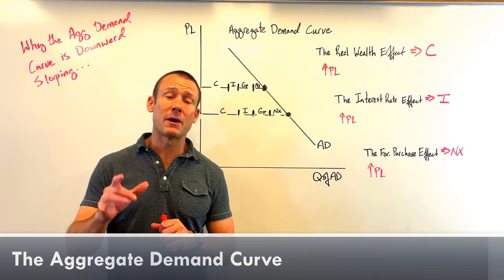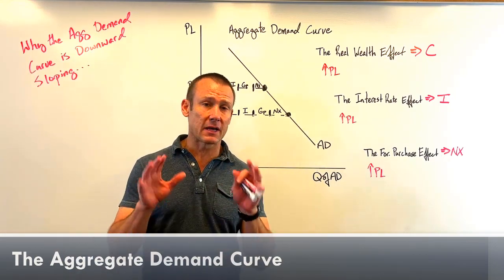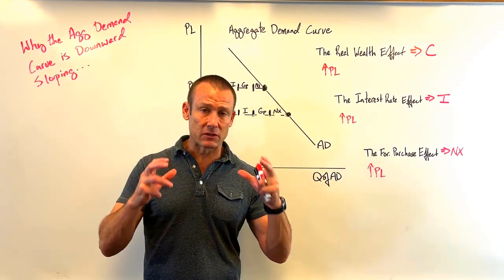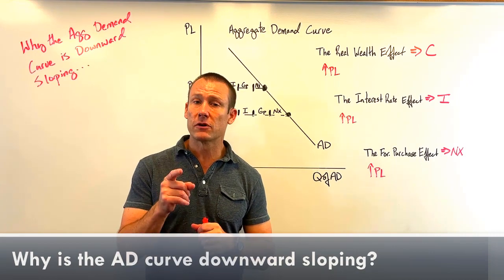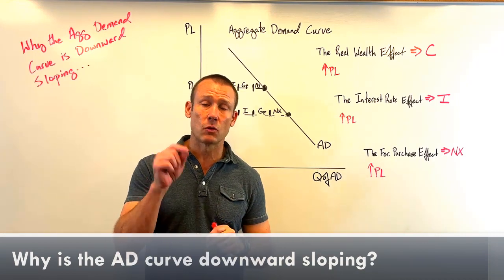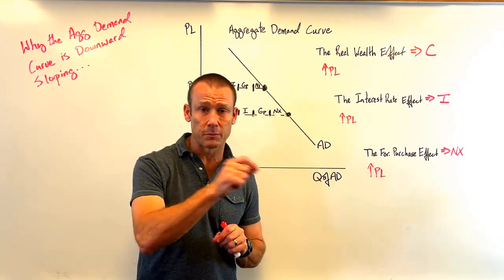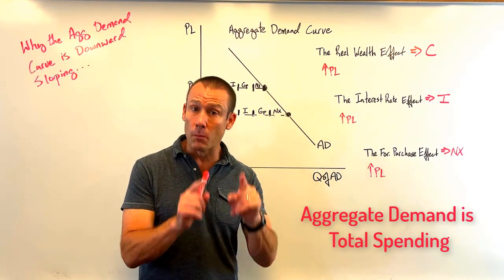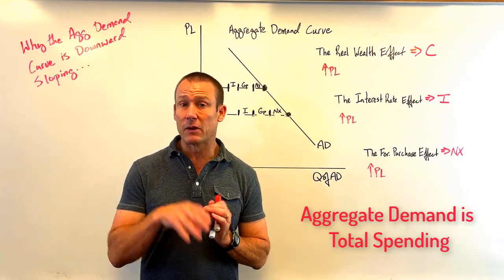In this video we're talking about why aggregate demand is downward sloping. We need to do a little groundwork first. What is aggregate demand? It is total spending on domestically produced goods and services.